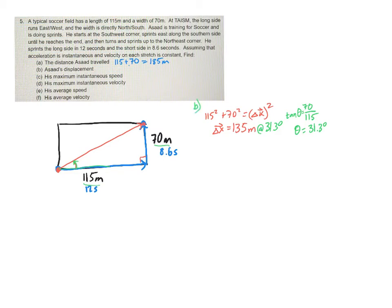Okay, that was letter B. On to letter C, his maximum instantaneous speed. All right? Well, they gave us some information on this. They told us that he did the first 115 meters in 12 seconds. And so we know that speed is distance over time.